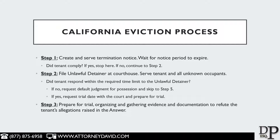Step number two is the actual filing of the unlawful detainer or eviction case at the courthouse. You're going to want to have the tenant served and all unknown occupants. It's very important to have all unknown occupants served because that will help you later on if someone tries to file a prejudgment claim. Once you file the unlawful detainer and have the tenant served, you need to wait the appropriate number of days to see if the tenant is going to respond and contest the case or not. If the tenant fails to dispute the case, you can request a default judgment for possession of the property and skip to step number five.